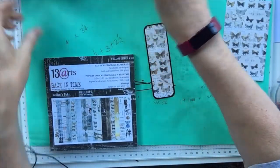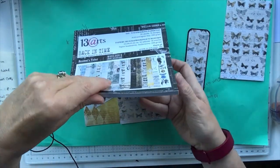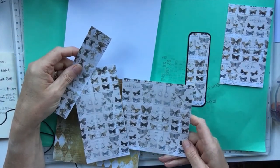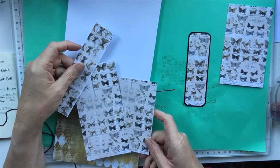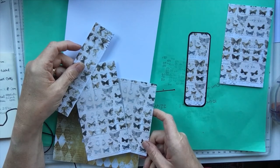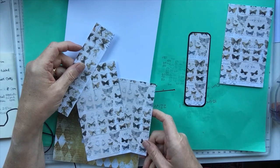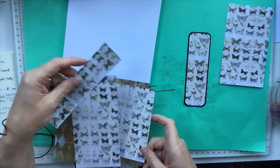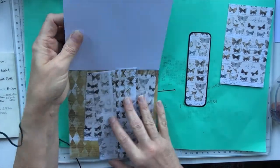The paper that I'm using is Back in Time from 13 arts. I cut my paper before I was thinking about measurements, so I've actually sacrificed two pieces of paper. You will need another piece of patterned paper for your wallet that is three inches by five inches.